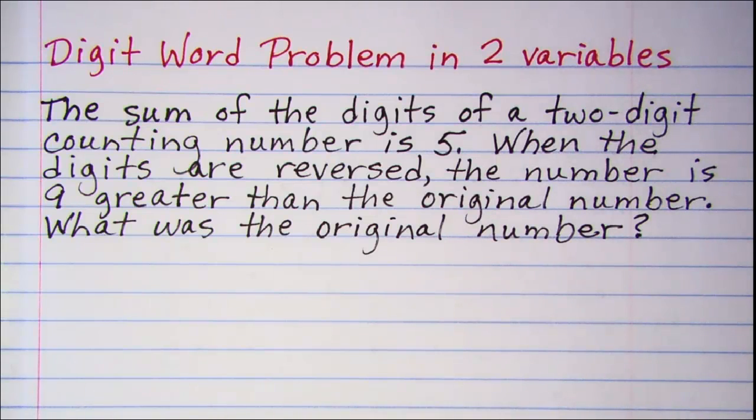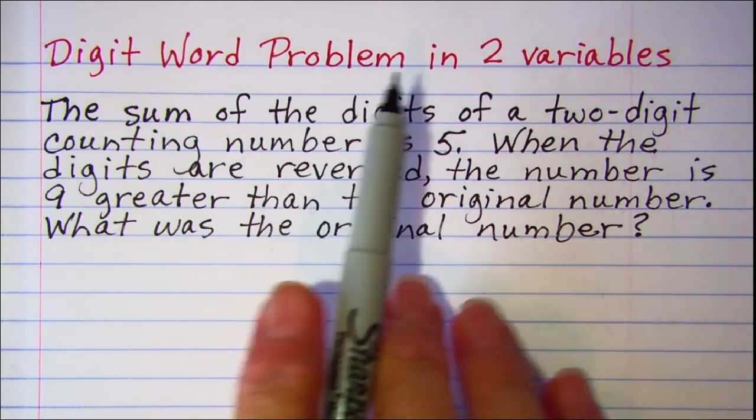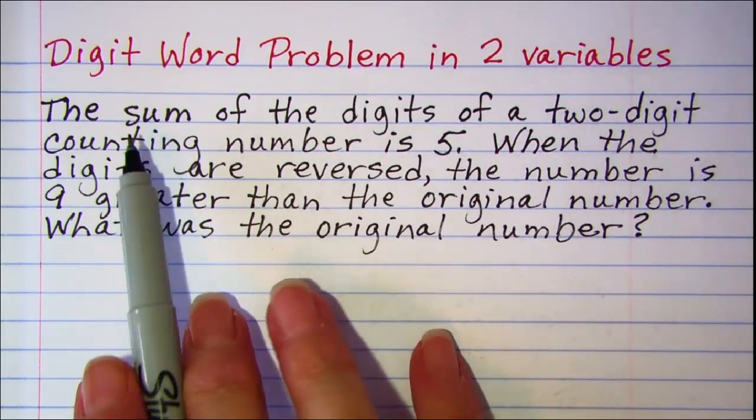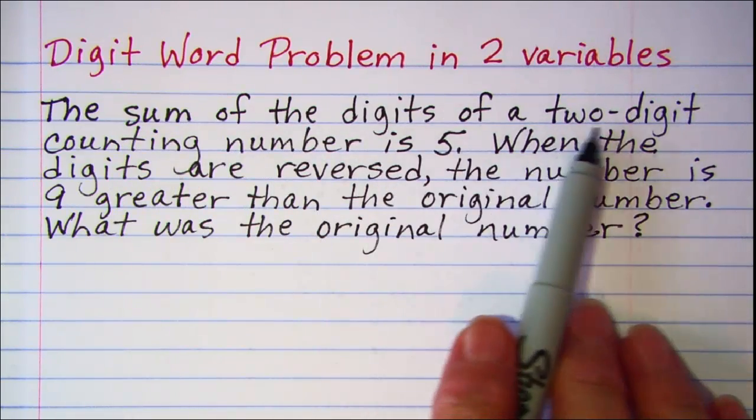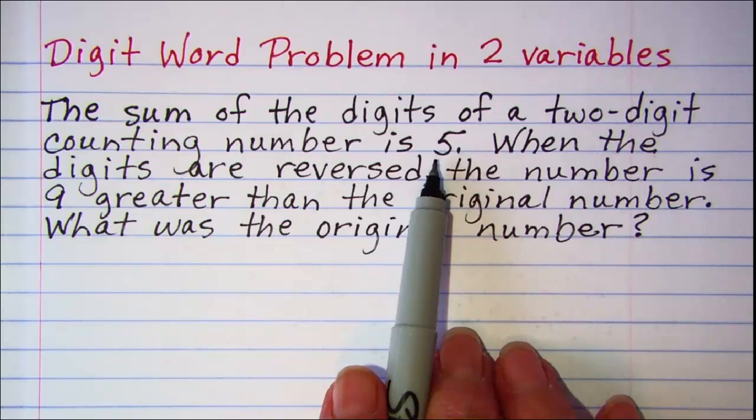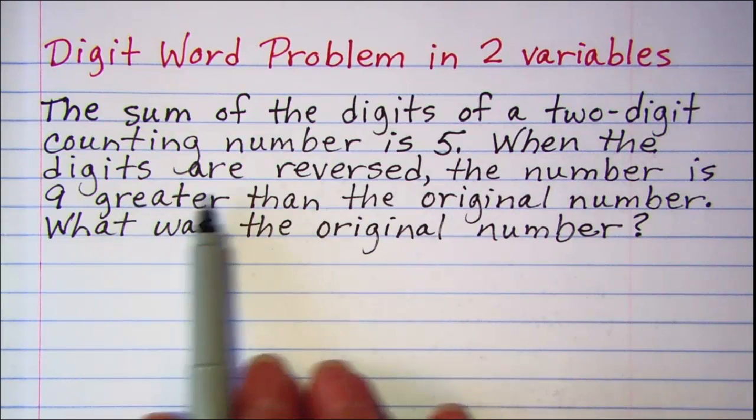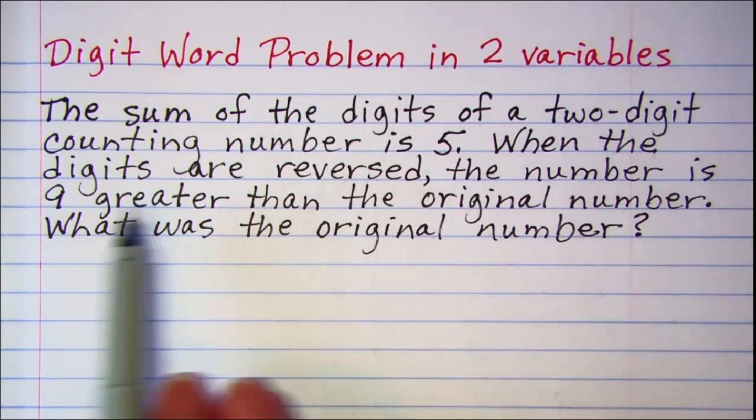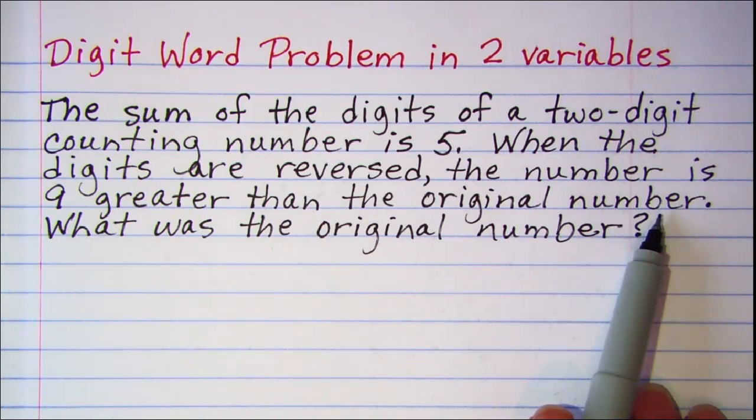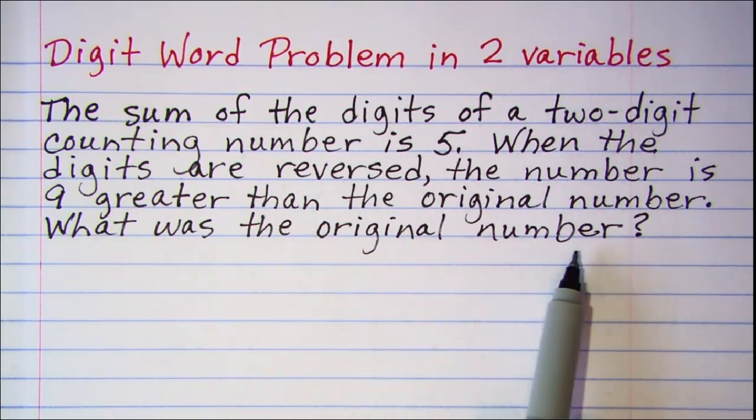In this video, we'll be doing a digit word problem in two variables. The sum of the digits of a two-digit counting number is 5. When the digits are reversed, the number is 9 greater than the original number. What was the original number?